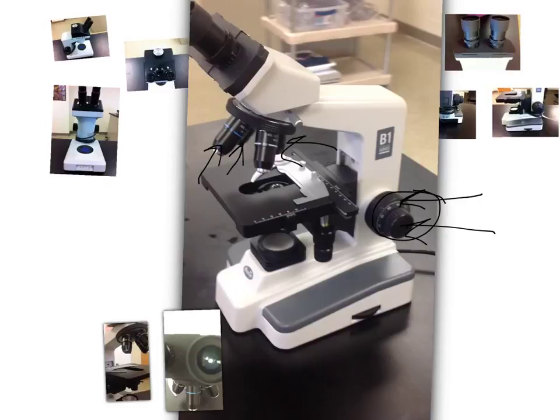And that's because you don't want your objective to hit your actual slide. Here, this is how we adjust the light. So you're going to be sliding it back and forth. That lets different amounts of light in. And again, this is how you move your stage. Do not move your stage manually. You want to make sure that you're using these different knobs to turn the stage left and right or back and forth.